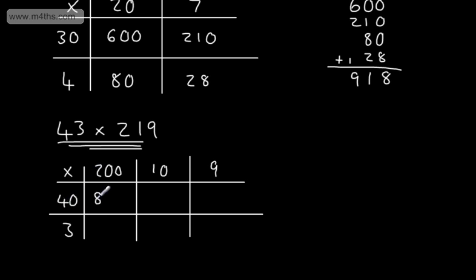4 times 2 is 8, and then I'm going to add the zeros. 4 times 1 is 4. I add the zeros. 4 times 9 is 36, and I add the zero. 3 times 2 is 6, and I add the zeros. 3 times 1 is 3. I add the zero. So 3 times 9 is 27.